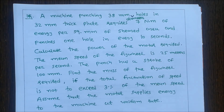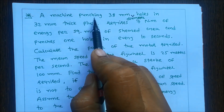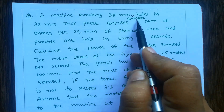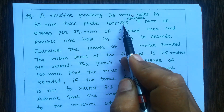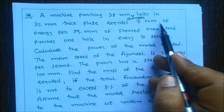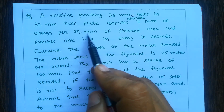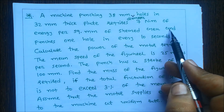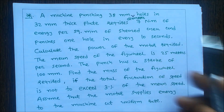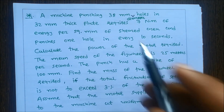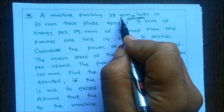Today we discuss how to solve a punching machine numerical. In our question, a machine punches 38 mm diameter holes in a 32 mm thick plate, requires 7 Newton·meter of energy per square mm of sheared area, and punches one hole every 10 seconds.